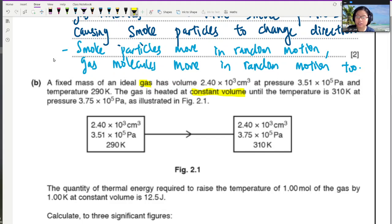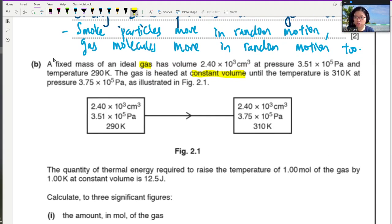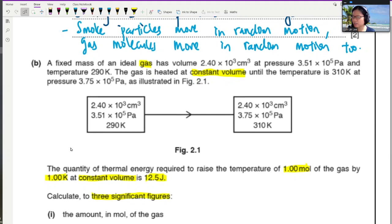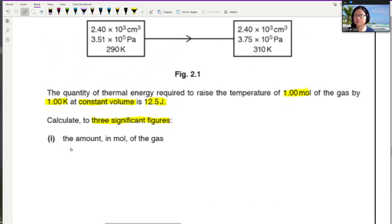The quantity of thermal energy required to raise the temperature of 1 mole of the gas by 1 Kelvin at constant volume is 12.5 J. So, if you have already started your studies in chapter 11, which is a bit weird, we have this thing called specific heat capacity. But that is specific heat capacity for a unit mass. And sometimes when it comes to gases, we prefer to think about it as in terms of per unit mole. So, although this is not specific heat capacity, it is kind of similar. Calculate to 3SF. Strangely specific. The amount of mole of the gas.